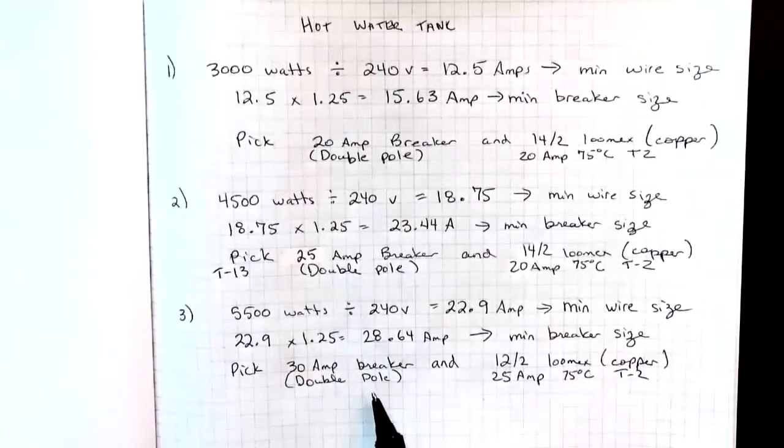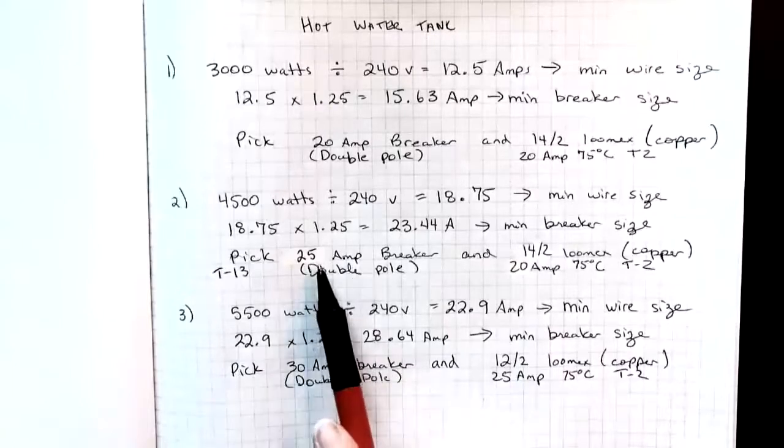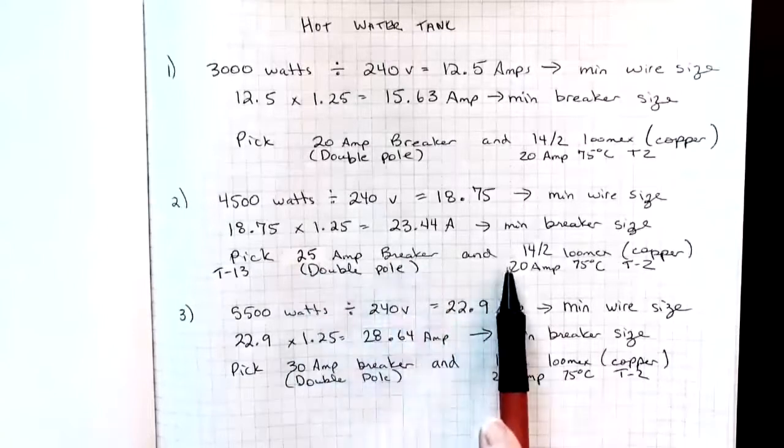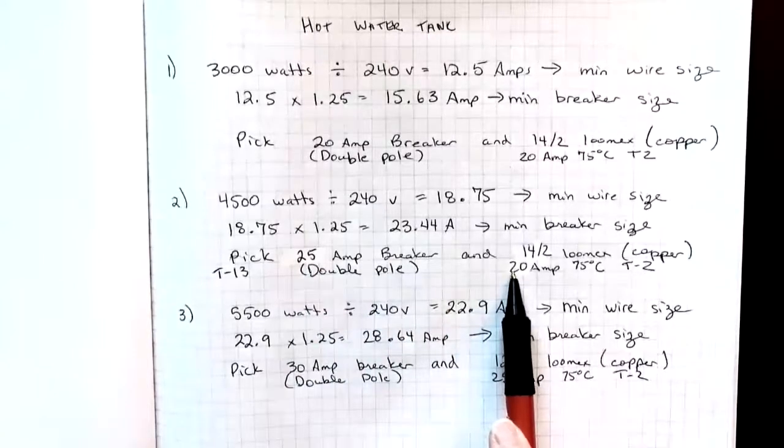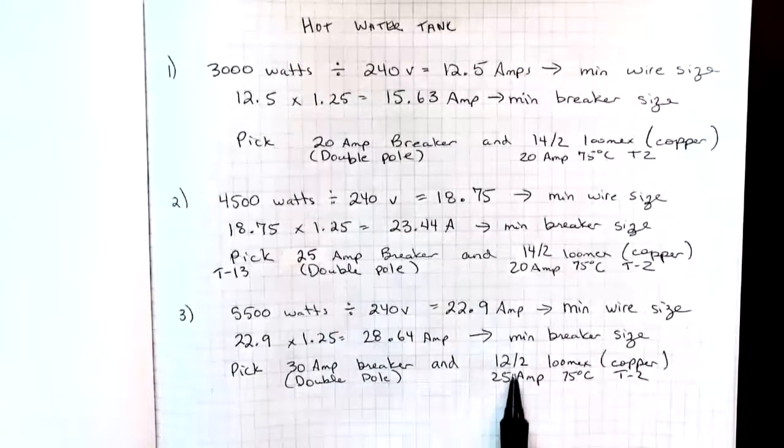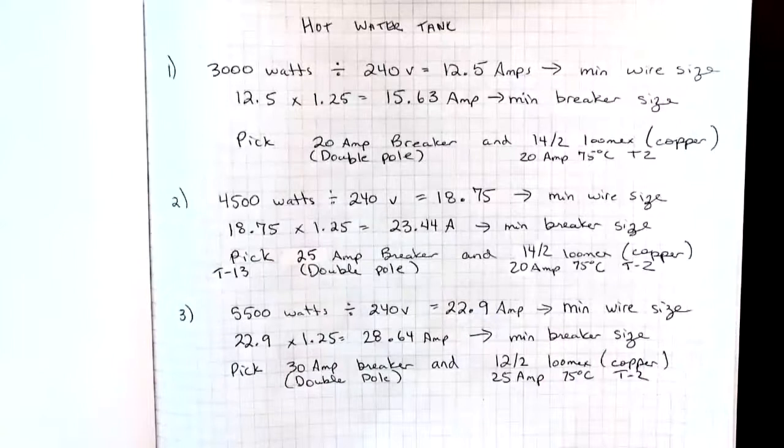Notice that in all of these, in these last two cases, we have a breaker that's rated for higher than the ampacity of the wire. And that's fine according to the rules that we saw in the previous video.